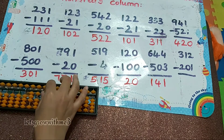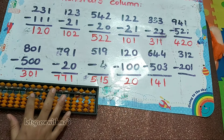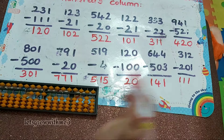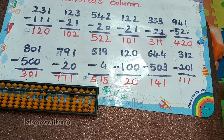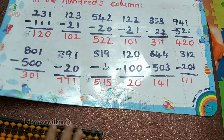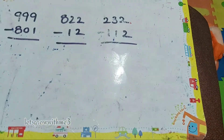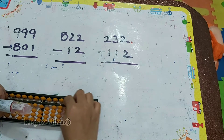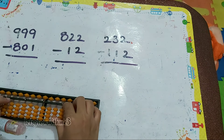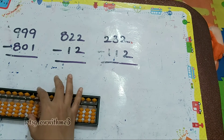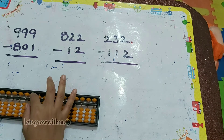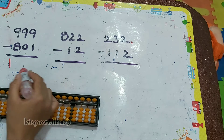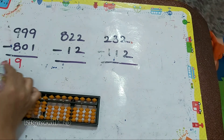Next one: 312 minus 21, so the answer is 111 — one hundred and eleven. Let's solve a few more problems. 999 minus 81, so the answer is 198.